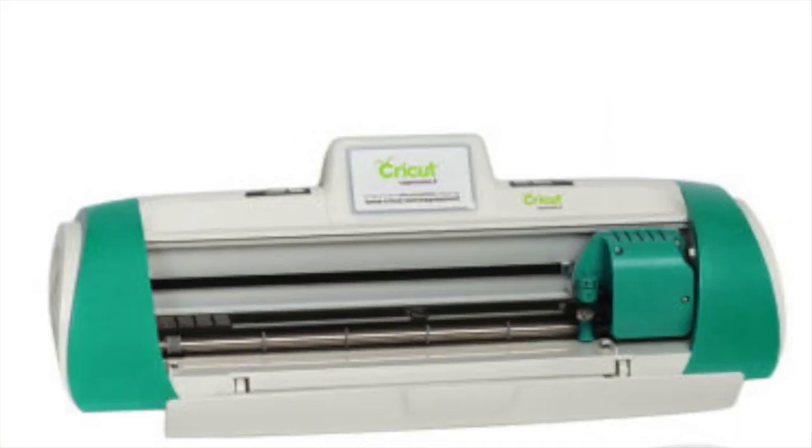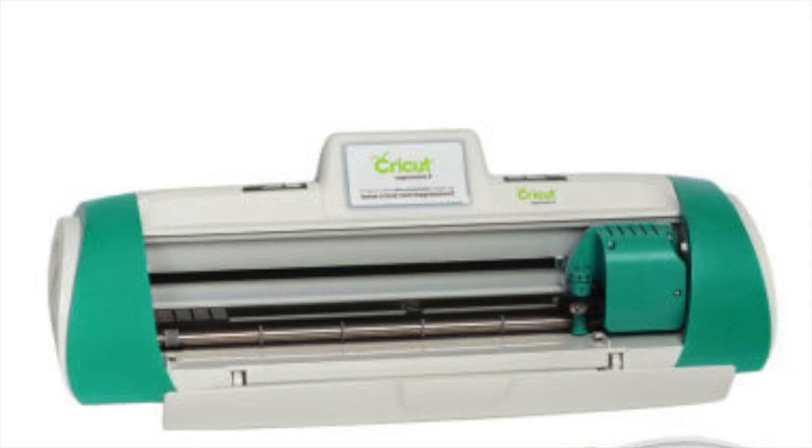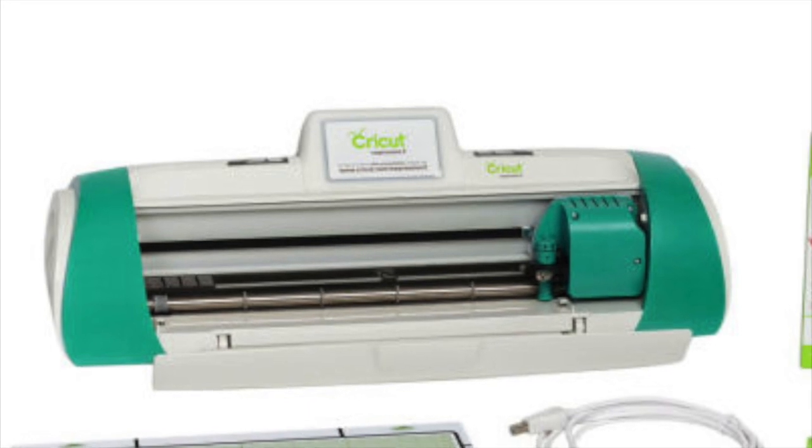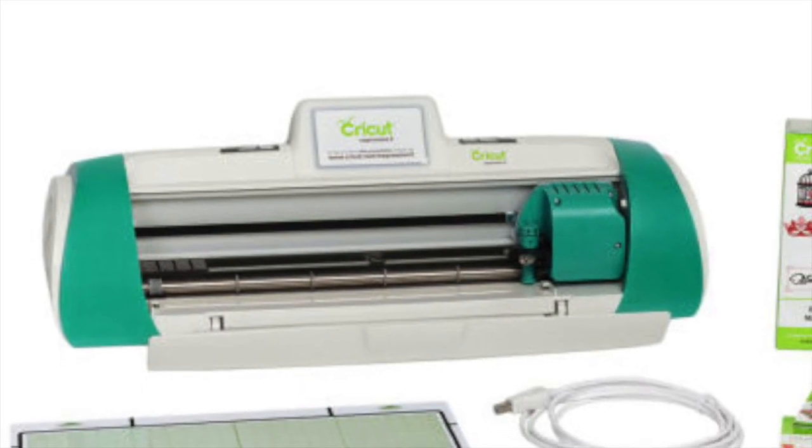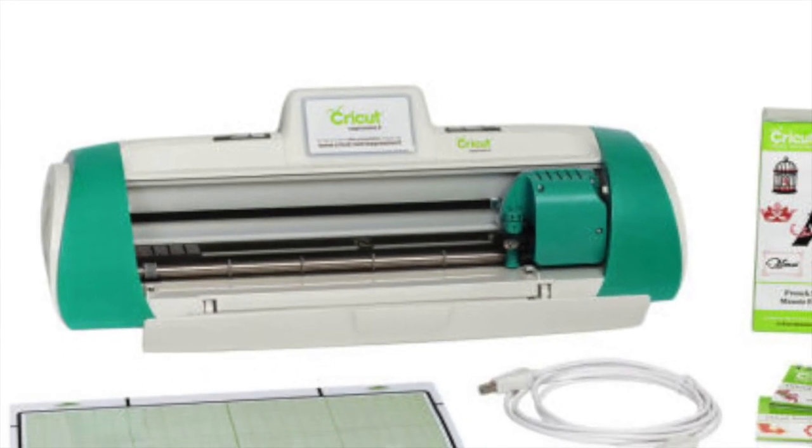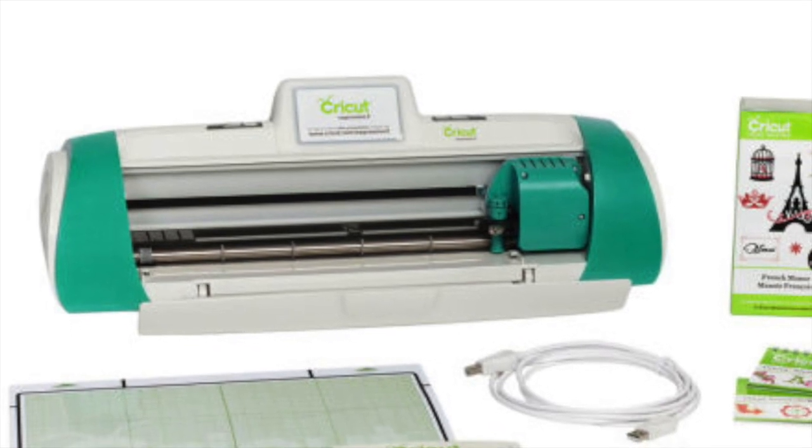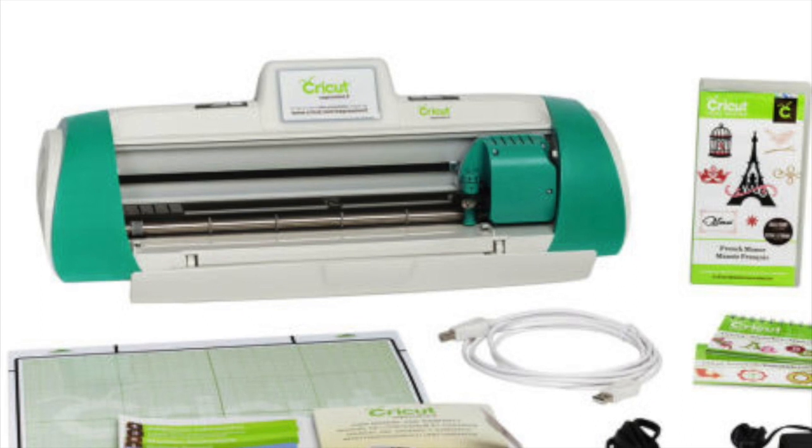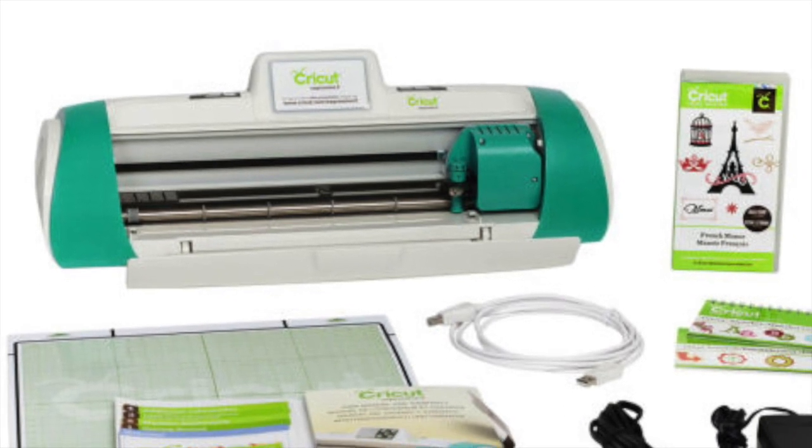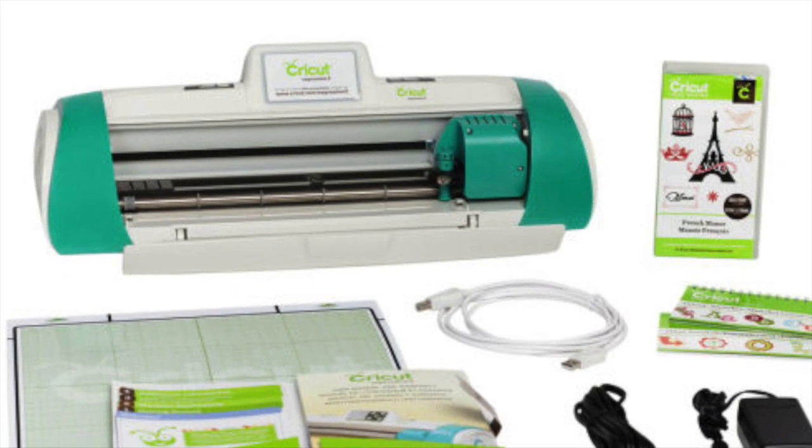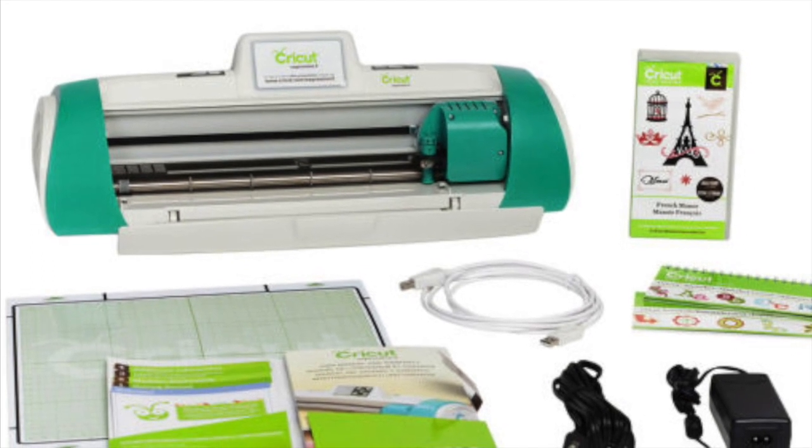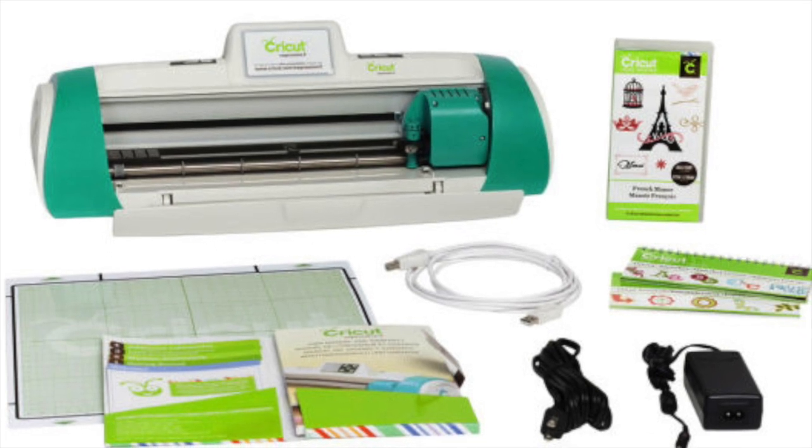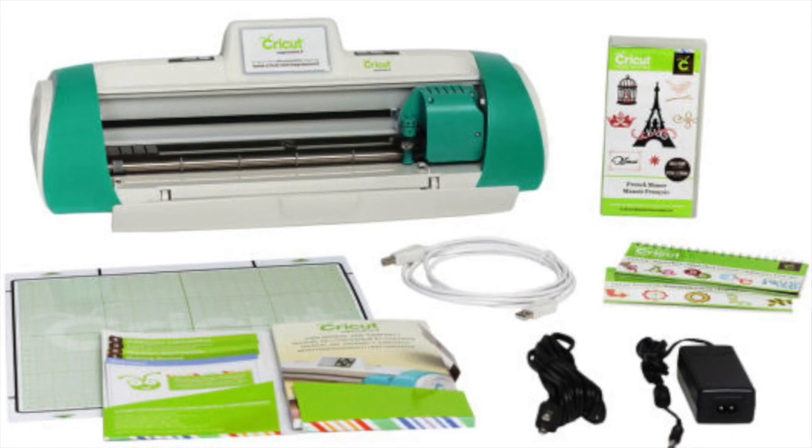So at first glance out of the box with the Cricut Expression 2 you get the box, the USB cable, a mat, a physical cartridge, two preloaded cartridges, and the user manuals. The Cricut Expression 2 is a cartridge based system and can be used online with Cricut Craft Room and at the time was a great machine. However with the new Cricut Explore I feel it has taken over the crafting world by storm and here is why.